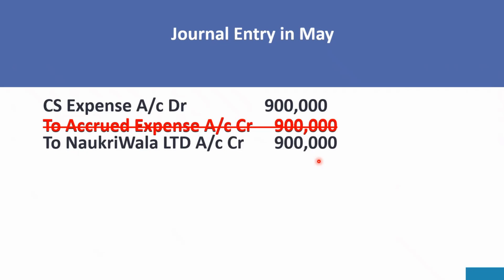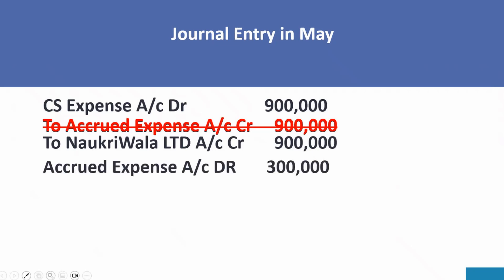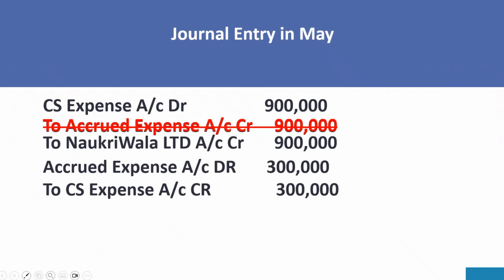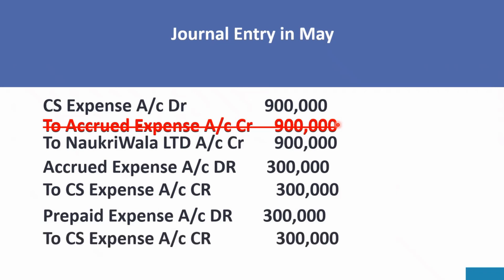The second entry in May is the reversal of the accrual booked in April. We switch the sign: Accrued Expenses Account debit three lakh rupees, to CS Expense Account three lakh rupees. The third entry in May relates to the prepaid expense. We received the invoice for all three months in May, but one month's services have already been covered by the April accrual and one month is in the future, so we book: Prepaid Expense Account debit three lakh rupees, to CS Expense Account.